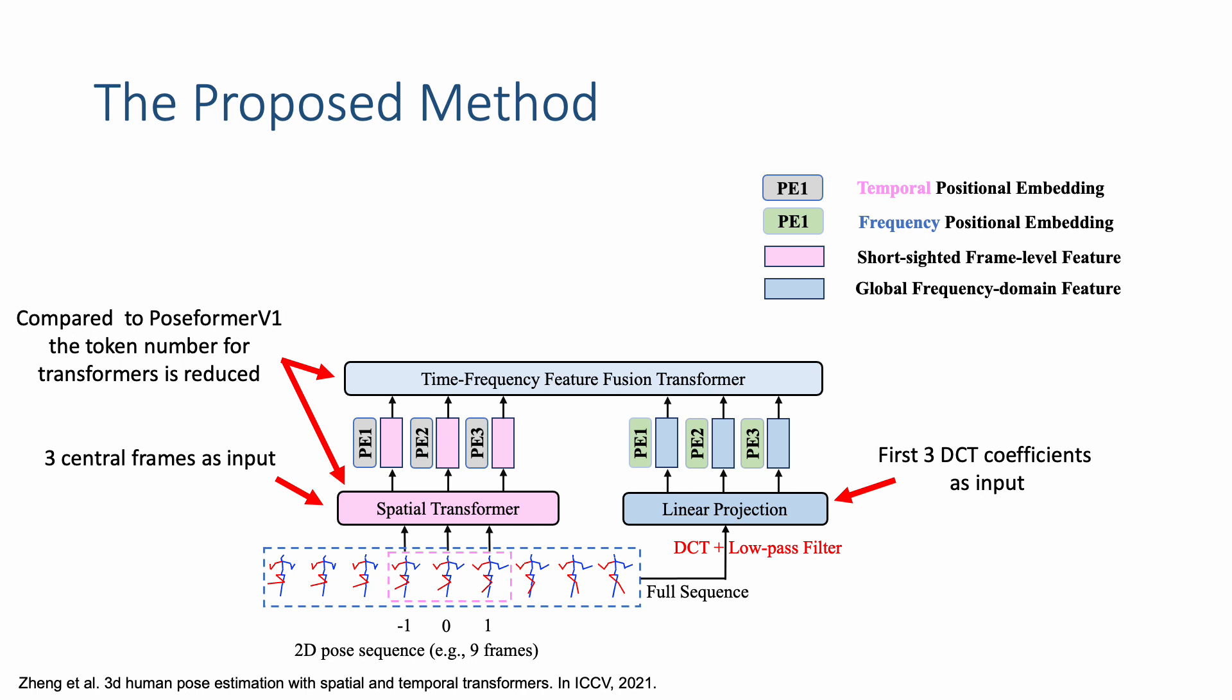Therefore, compared to PoseFormer V1, the token number as input to the spatial and temporal transformer is reduced. Finally, we use a regression head to get the target 3D pose for the central video frame.